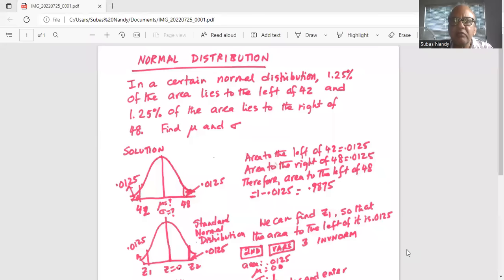In a certain normal distribution, 1.25% of the area lies to the left of 42 and 1.25% of the area lies to the right of 48. Find the mean and standard deviation.